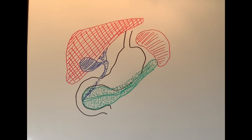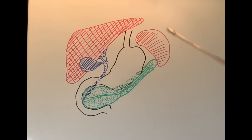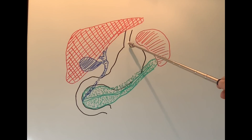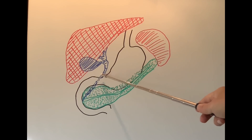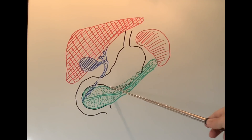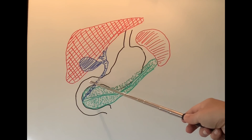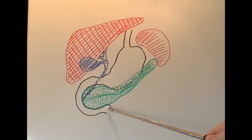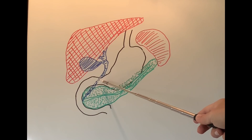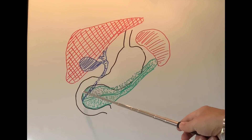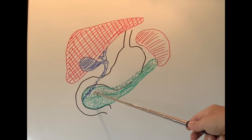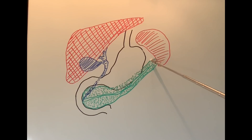Before we start talking about all the procedures performed on the pancreas, I'm going to recap the anatomy of the pancreas and what is lying around it, which is very important in these procedures. So this is our gullet or the esophagus that opens into our stomach, which is like a big bag. The stomach opens into the first part of our small intestine, which is shaped like a C, called the duodenum. In the C of the duodenum sits this structure which I've drawn in green — it looks like a leaf — and that is the pancreas.